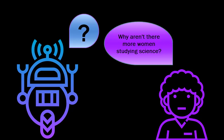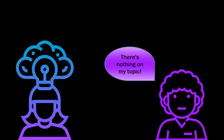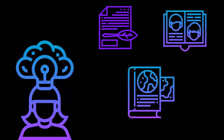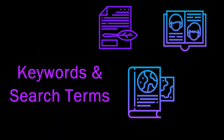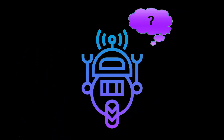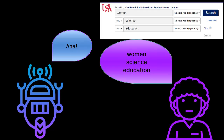This happens to students all the time. They go to the library databases, type in their thesis statements, and get no results. Then they tell their librarian, 'There's nothing on my topic.' The truth is, there's plenty of information on the topic — the students just aren't speaking the language of keywords and search terms. To talk to the databases, you have to identify your topic's keywords, which are the words that represent the most important concepts.